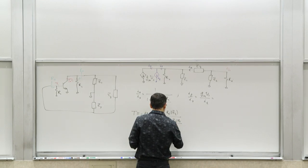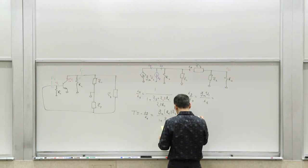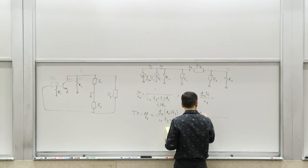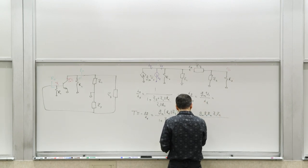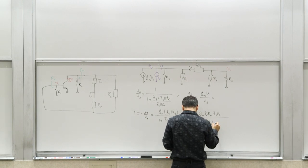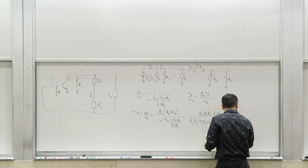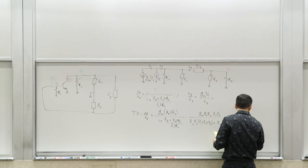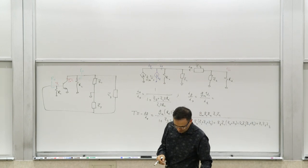Simplifying the full expression, the return ratio reduces to: numerator GM·RI·RO·Z1·Z2, and denominator RI·RO·(Z1+Z2+Z3) plus RO·Z2·(Z1+Z3) plus Z1·Z2·Z3. That's a long expression in the denominator, but that's what we need.